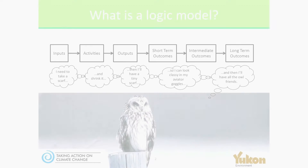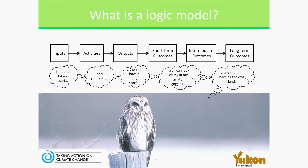A logic model is a one-page snapshot of a program or policy. It's a helpful tool for communicating what a program is doing, and also the underlying logic of why it's doing what it's doing. It's a results chain, which shows how the program is using its resources, or its inputs, to ultimately achieve its intended outcomes.